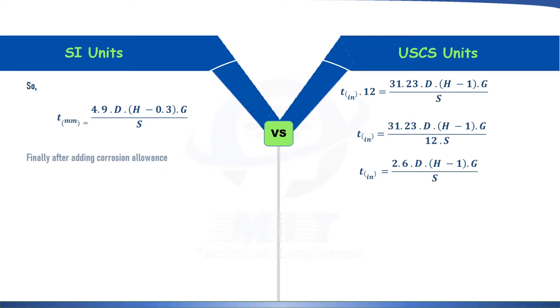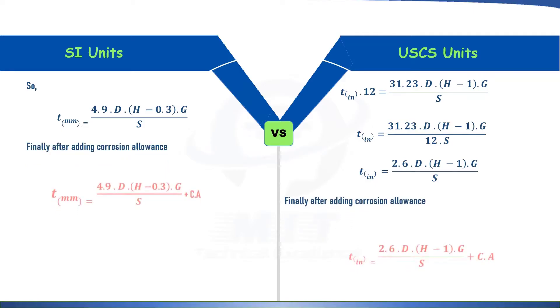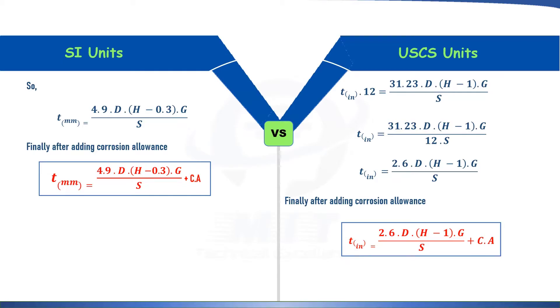Now after adding corrosion allowance, we will get this final equation which is thickness in millimeter is 4.9 times diameter H minus 0.3 times G over S plus corrosion allowance and respectively for USCS unit thickness in inches is 2.6 times diameter H minus 1 times G upon stress plus corrosion allowance. And as we can see, we can compare these equations. These are the equations provided by API 650 code for both units that is SI unit and USCS unit. So we can see how we started from a simple Barlow's formula and we ended up with this API 650 code equation for 1 foot method in both units.